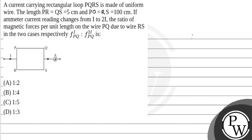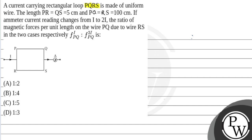Let's see the question. A current carrying rectangular loop PQRS is made of uniform wire. The length PR equals QS equals 5 cm and PQ equals RS equals 100 cm. If the ammeter current reading changes from I to 2I, then the ratio of the magnetic forces per unit length of wire PQ due to wire RS in the two cases is to be found.